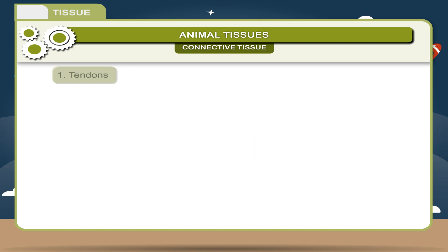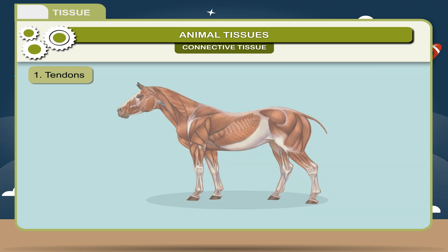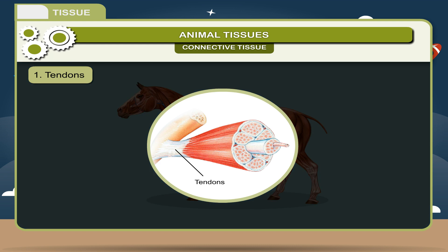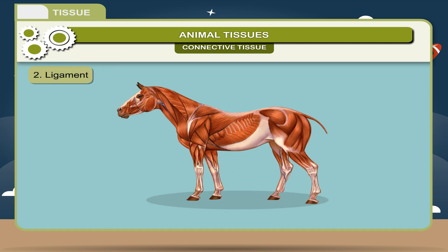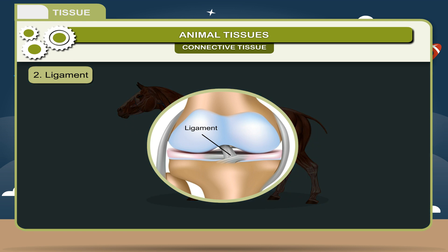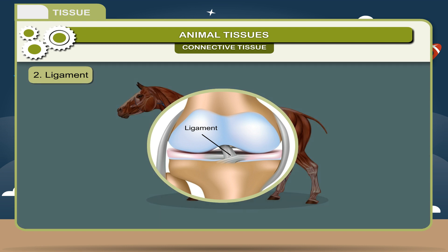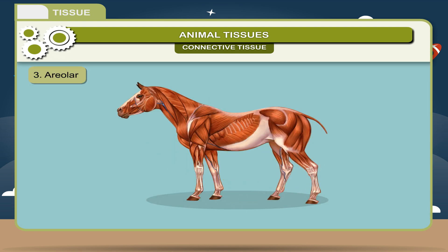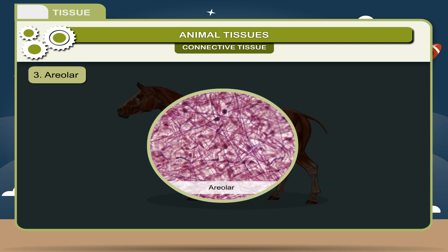Structure: 1. Tendons — A band of tough fibrous tissue that attaches a muscle to a bone is called a tendon. 2. Ligament — A band of tough fibrous tissue that connects bones and cartilage at a joint or supports an organ, muscle, or other body part is called a ligament. 3. Areolar — A fibrous tissue with jelly-like matrix is called areolar tissue. It binds the skin to the underlying parts in animals.